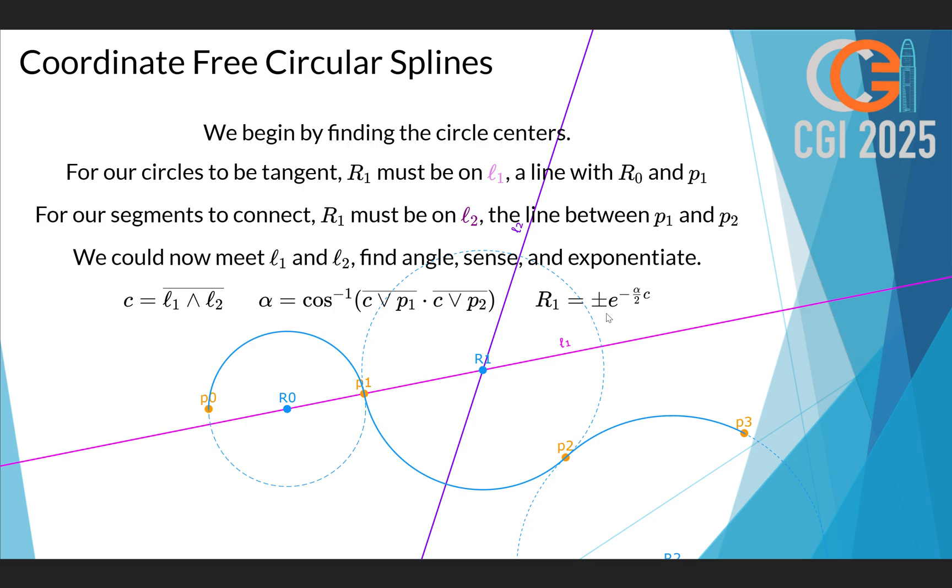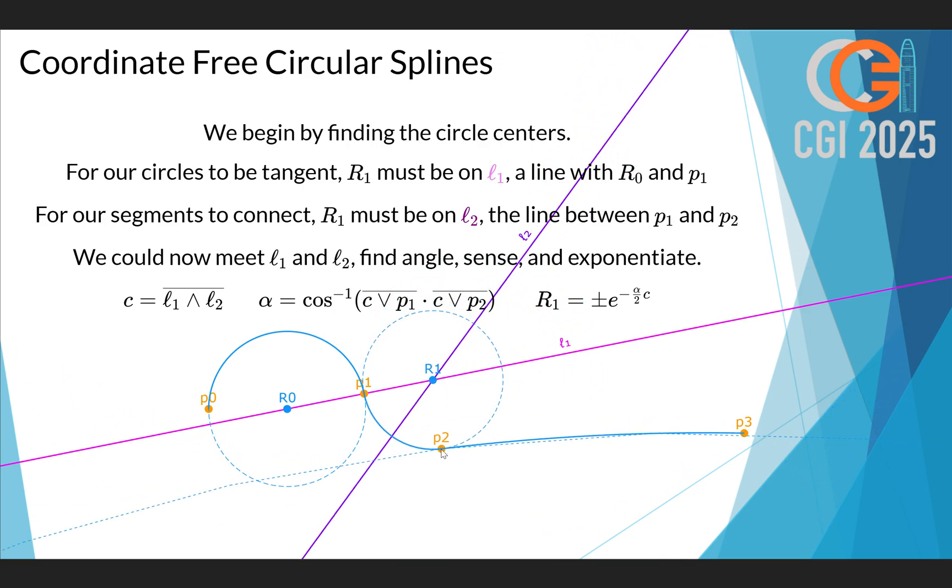Now luckily, the exponential function is not the only way that we can create rotations in geometric algebra. Another way to do that is by taking the product of two reflections. In this two-dimensional case, those would be reflections in lines. And the two lines we would need in order to make that rotor, they would need to intersect at the center R1. And then they would produce a rotation with twice the angle between them.